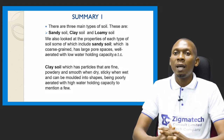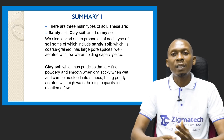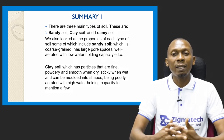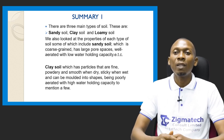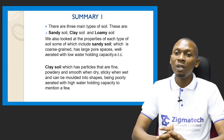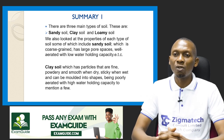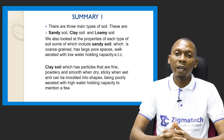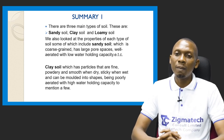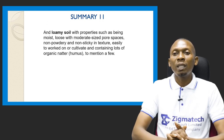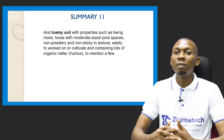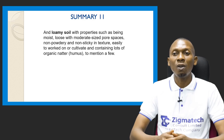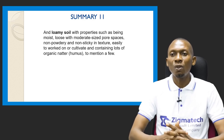In summary: there are three main types of soil — sandy soil, clay soil and loamy soil. Sandy soil is coarse-grained, has large pore spaces, is well aerated and has low water-holding capacity. Clay soil has fine, powdery, smooth particles when dry, is sticky when wet, can be molded into shapes, is poorly aerated and has high water-holding capacity. Loamy soil is moist, loose with moderate-sized pore spaces, non-powdery and non-sticky, easily cultivated, and contains lots of organic matter or humus.